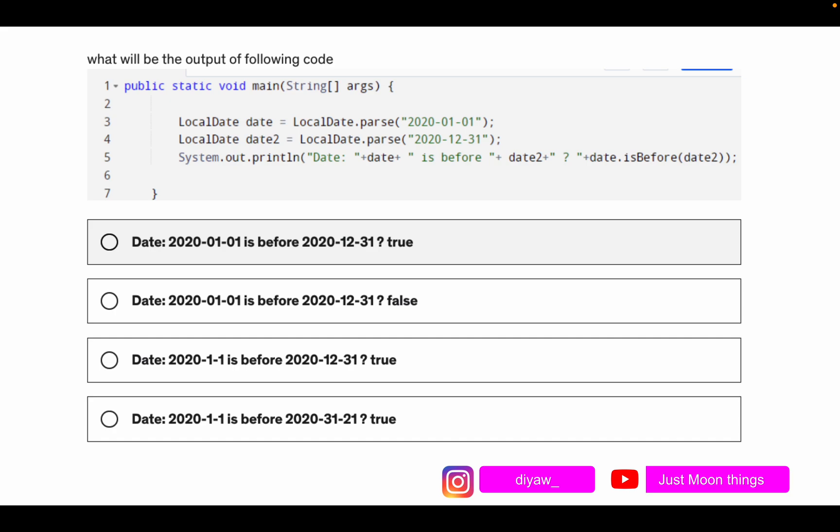To create the objects we are trying to use the parse method and we are trying to give it a date in the format of yyyy-mm-dd and we are giving it in the form of string. And what we are trying to print is date string, then the date that this particular object value.